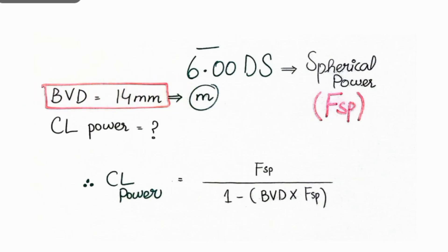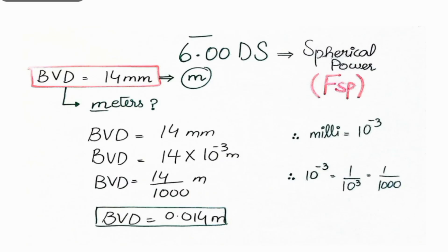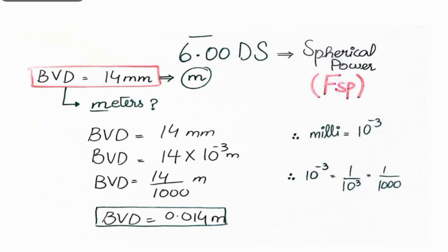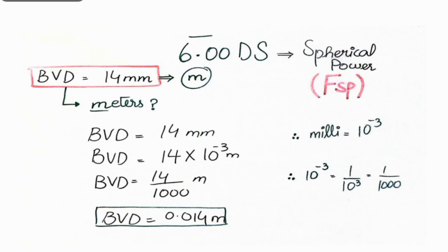First, you have to convert the back vertex distance into meters. Back vertex distance is usually 12 to 14 millimeters. You can convert the prefix 'milli' using its value: 1 milli equals 10 to the power of minus 3, which equals 1 over 1000. So 14 millimeters equals 14 over 1000 meters, giving us a back vertex distance of 0.014 meters.